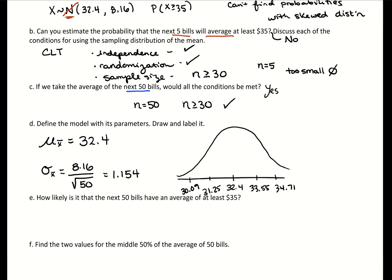How likely is it that the next 50 bills have an average of at least $35? We want to use this distribution that we just found because we're asking for the probability from a sample size and how the average behaves. So we have a mean of 32.4, standard deviation 1.154, and we want to find the probability of being at least 35. In this distribution, 35 is out there somewhere and we want this area to the right. It's going to be a small probability based on just being a small area from the picture.